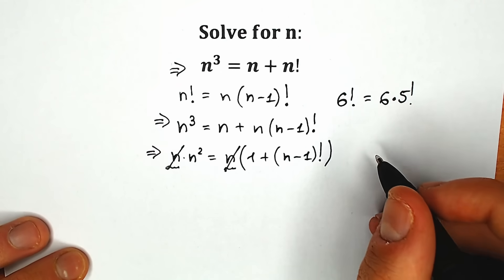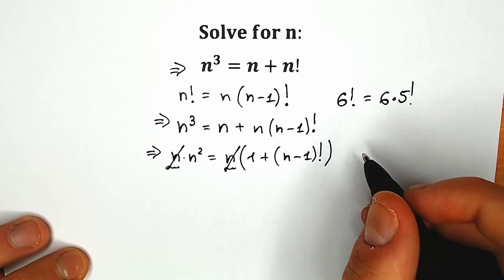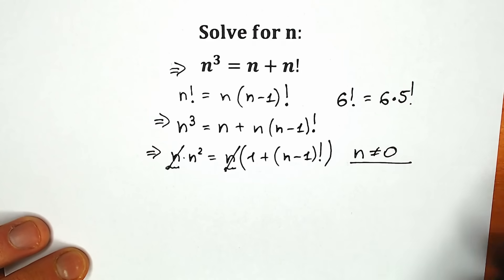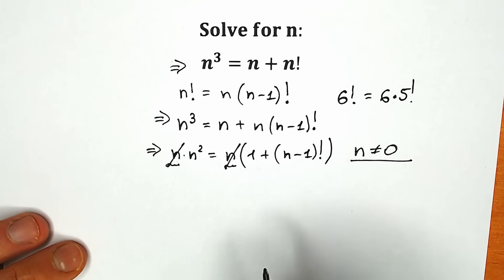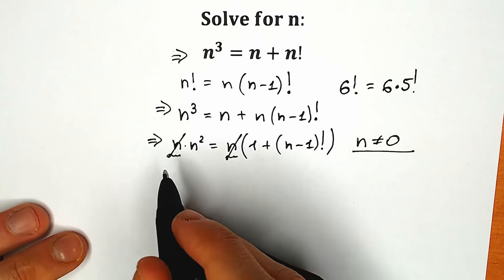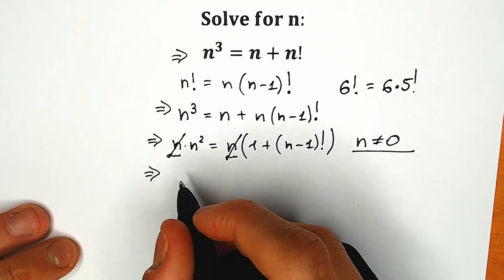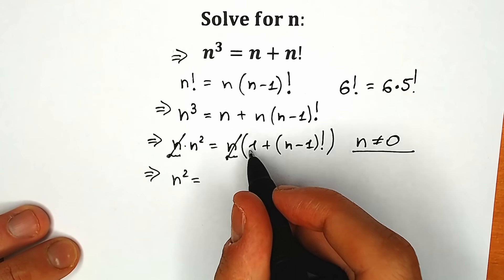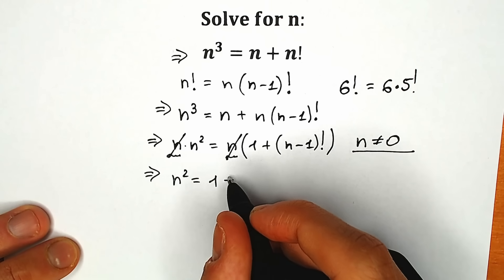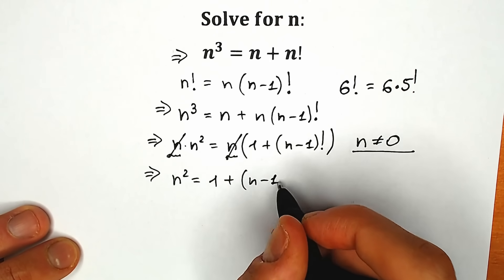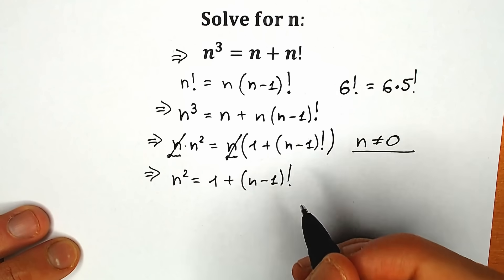We need to mention that n is not equal to 0, which is extremely important since we canceled by n. After canceling, we have n squared equal to 1 plus (n−1) factorial.